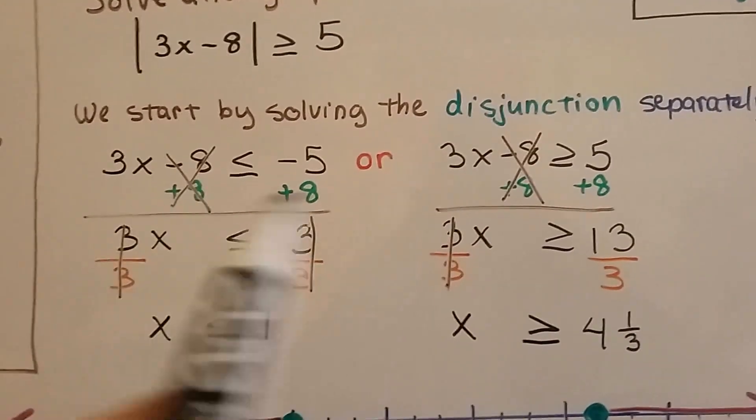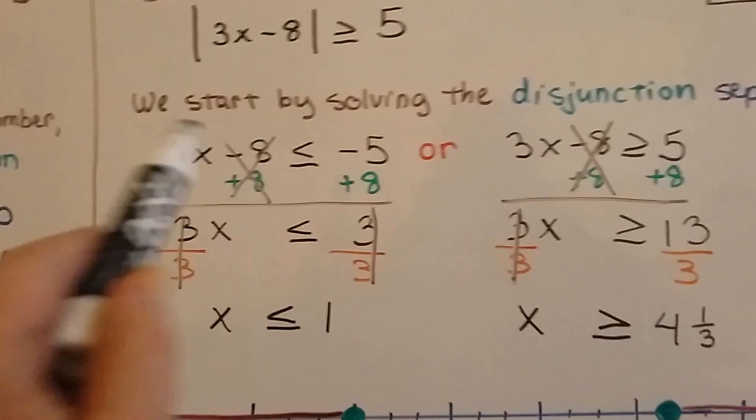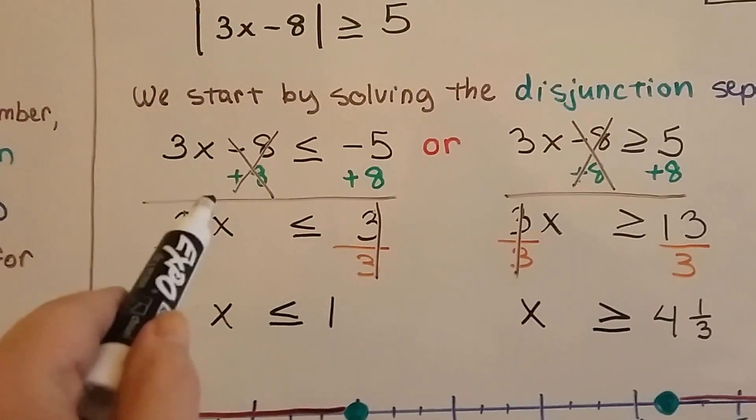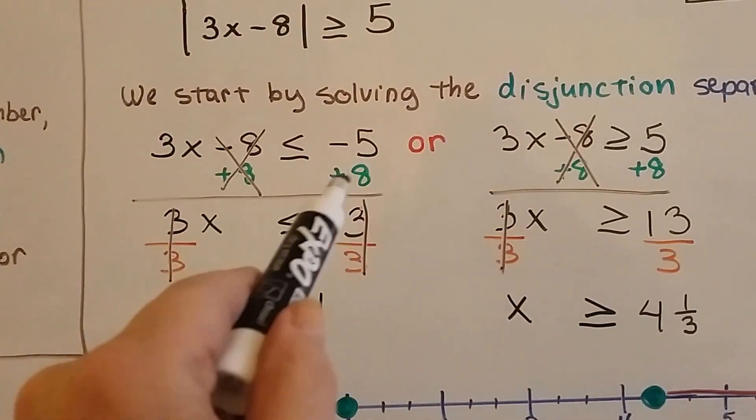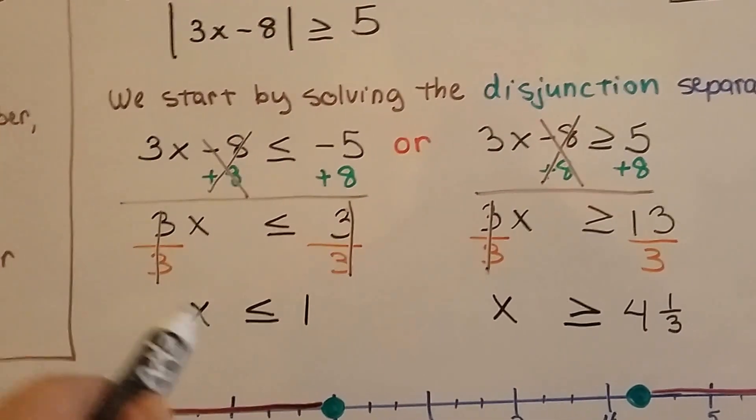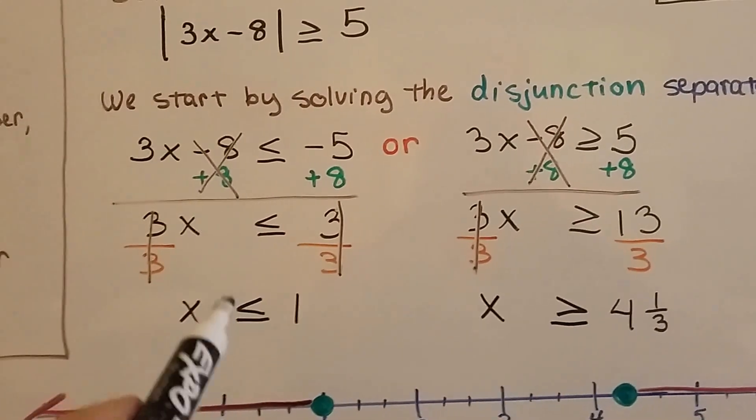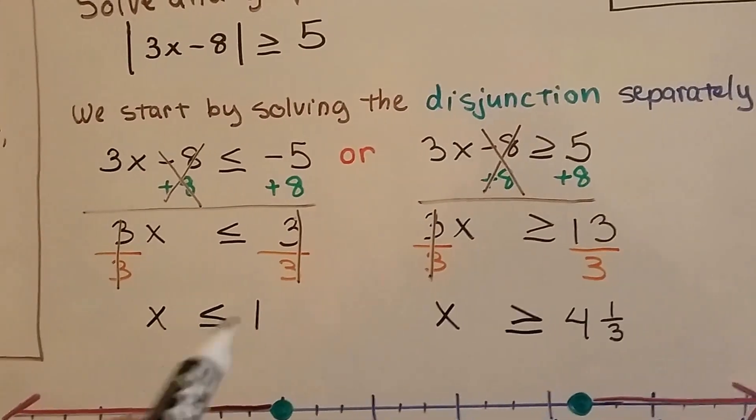So because it's minus 8, we know we can add 8 to each side. That created the zero pair here. So we got 3x is less than or equal to 3, because negative 5 plus 8 is a 3. We made our friend the invisible 1, and we got x is less than or equal to 1 for this side.